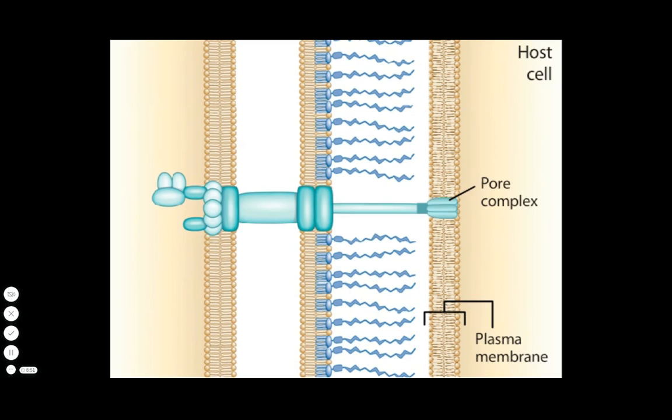Salmonella then uses its type III protein secretion system to deliver a cocktail of at least 13 different protein toxins, called effector proteins, directly into the cytosol of host cells. Inside the bacterium, chaperone proteins bind to the effector proteins, delivering them in a loosely folded form to the base of the needle.